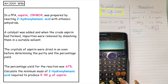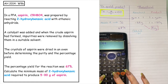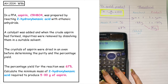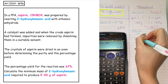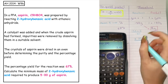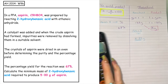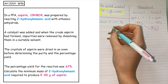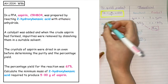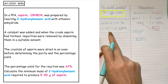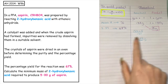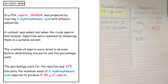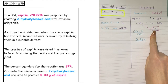Putting that into the calculator — 138 times 5 divided by 180 — gives a mass of 3.83 grams. Now that mass corresponds to the percentage yield of the reaction, so 3.83 grams of reactant would produce 67% of the product. However, if it only produces 67%, we're going to produce less than 5 grams — we would have 67% of the 5 grams.